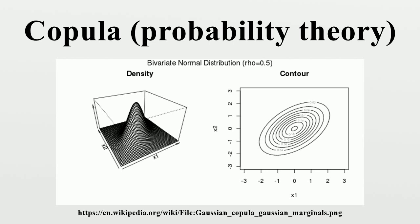The pseudo-copula observations are defined using the empirical distribution functions, and the corresponding empirical copula is then defined from these samples. The components can also be written in terms of the rank of the observation. Therefore, the empirical copula can be seen as the empirical distribution of the rank-transformed data.